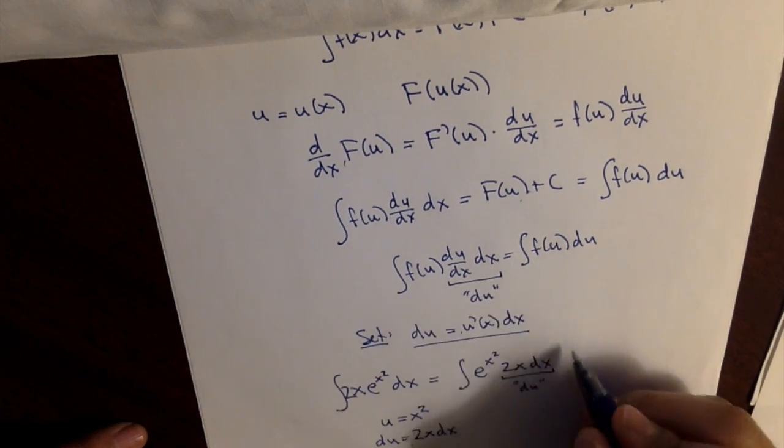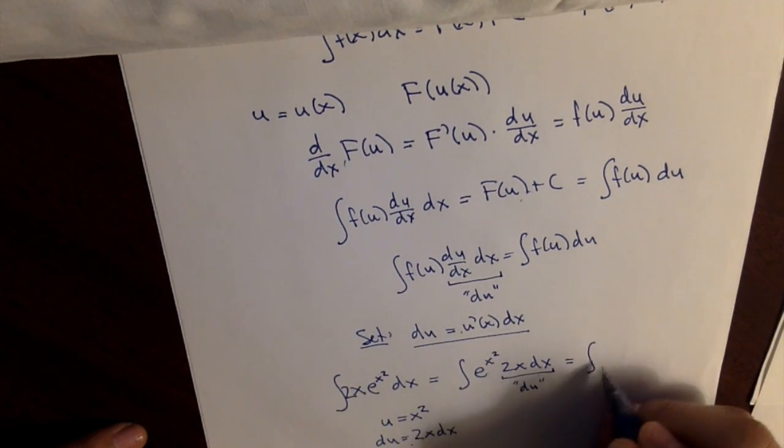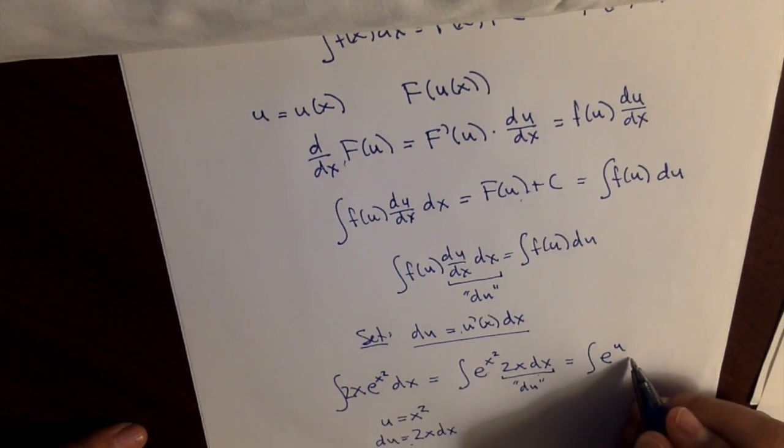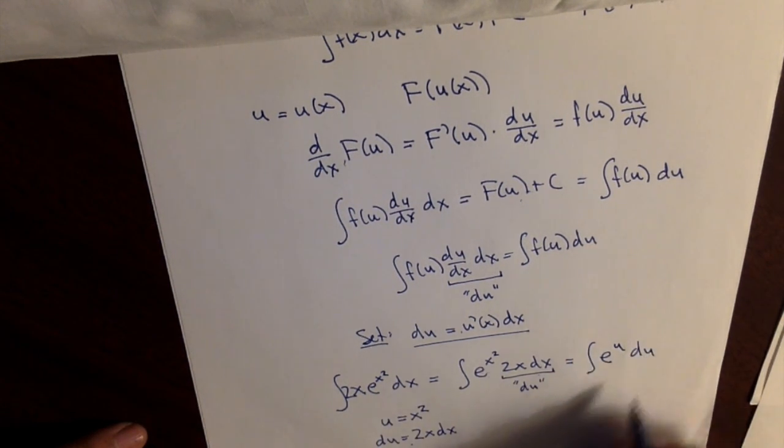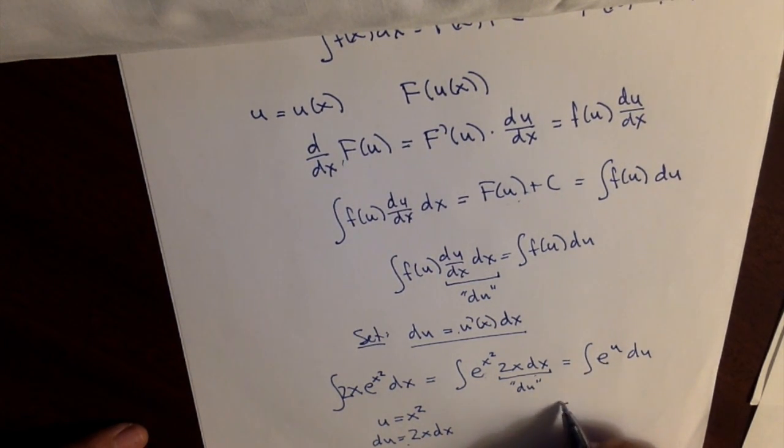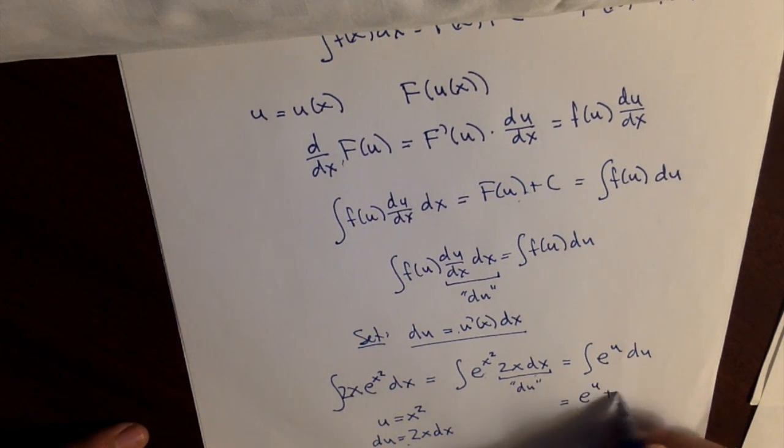And then I can rewrite my integral as the integral of e to the u, remember x squared is just u, du. And now I can do this integral just as if u is my variable and not x. And of course, the antiderivative of e to the u is itself plus c. And then to finish, I can convert this in terms of x again, e to the x squared plus c. And that's an antiderivative.